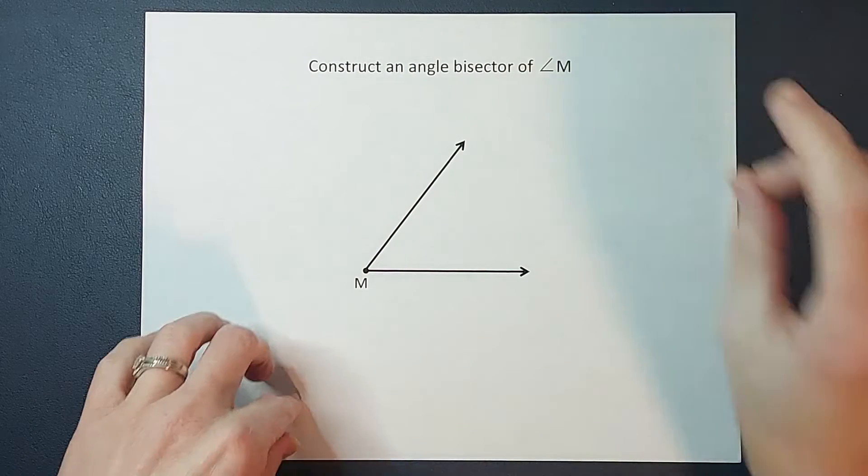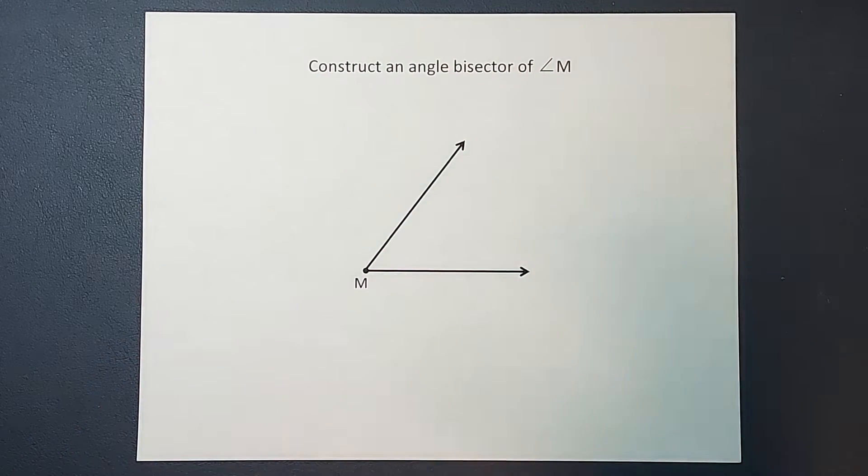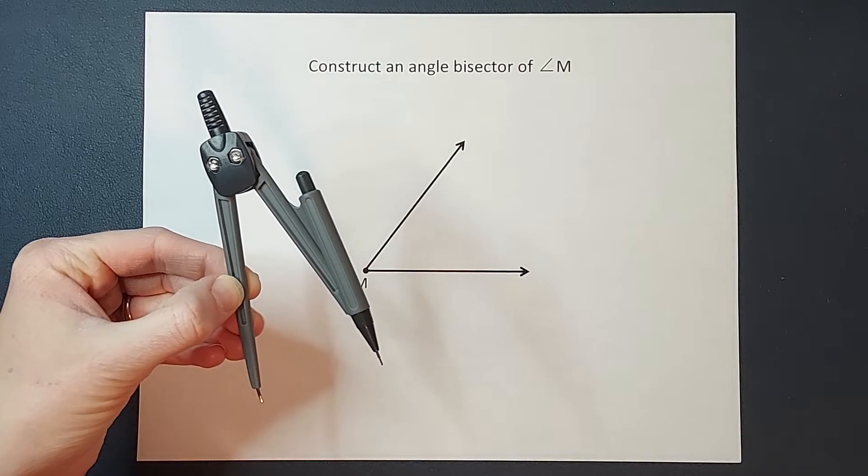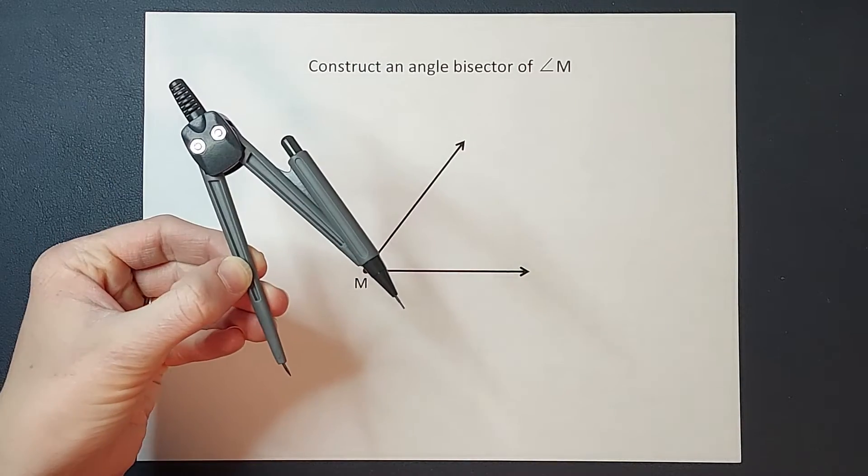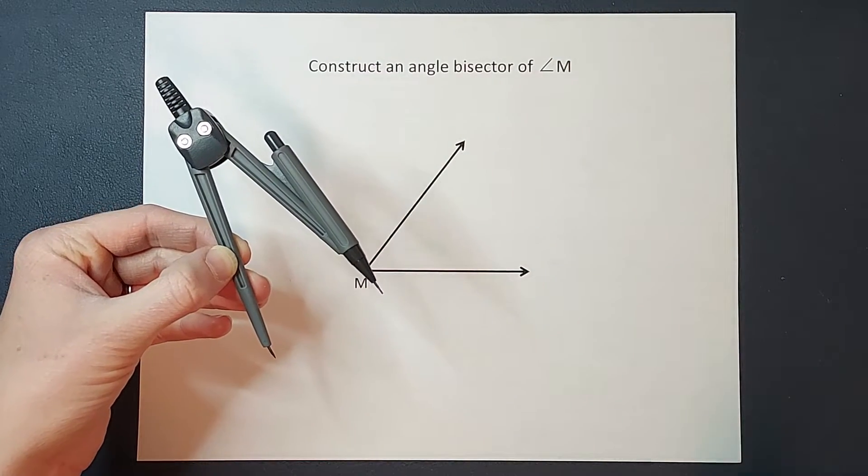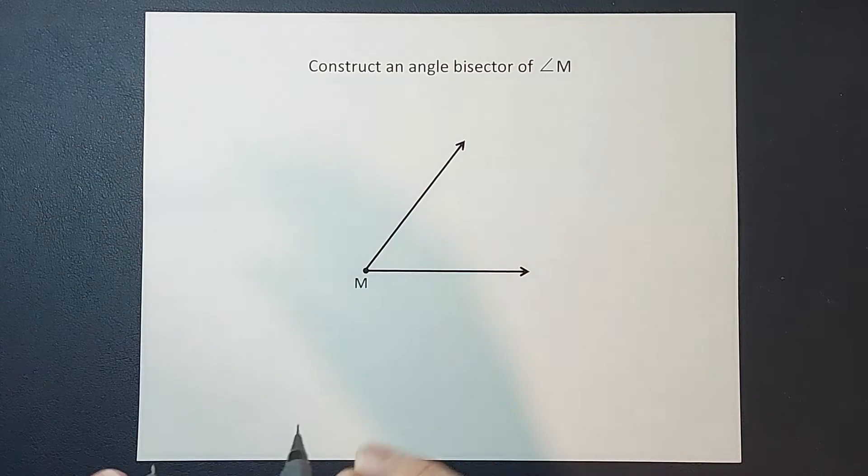Hey guys, we are going to construct an angle bisector today. So when we say construct, that means we're going to use a compass and a straight edge or a ruler. Now I'm going to use this compass I got off Amazon. I'll have a link to it down below if you're interested, but any compass you have will probably work fine.